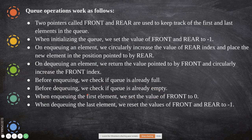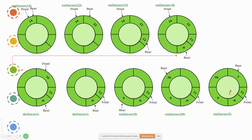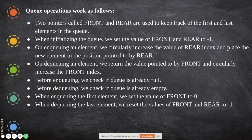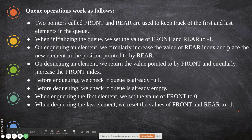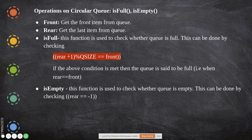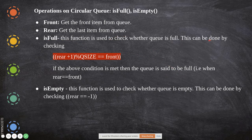Before enqueuing, we must check whether the queue is full — if it is, we get an overflow condition. Before dequeuing, we must check whether the queue is empty to avoid errors. When enqueuing the first element, we set front to zero. When dequeuing the last element, we set both front and rear back to minus one. The key operations on a circular queue are checking whether it is full and checking whether it is empty.